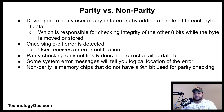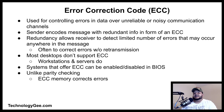As data moves through computers, the possibility of errors can occur. Parity error detection was developed to notify the user of any data errors by adding a single bit to each byte of data, responsible for checking the integrity of the other eight bits while the byte is moved or stored. Once a single bit error is detected, the user receives an error notification. However, parity checking only notifies and does not correct a failed data bit. Non-parity memory chips do not have the ninth bit used for parity checking.